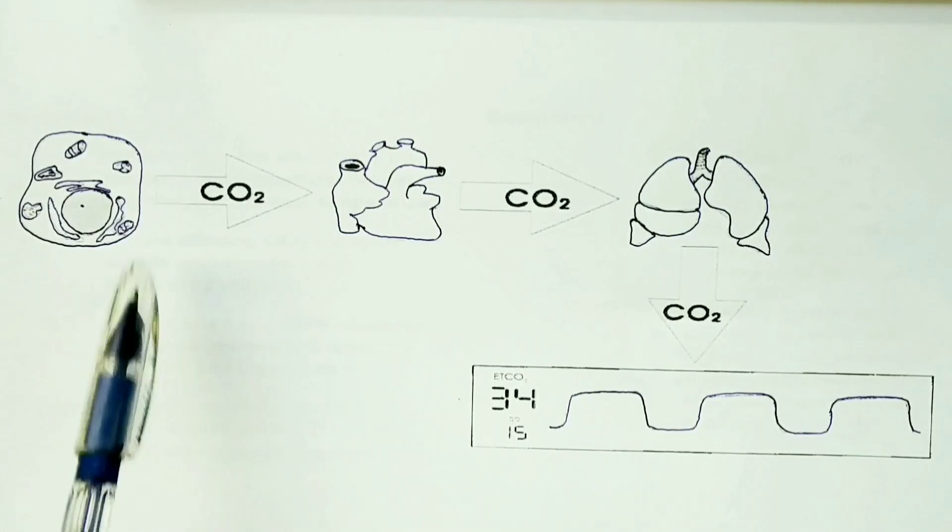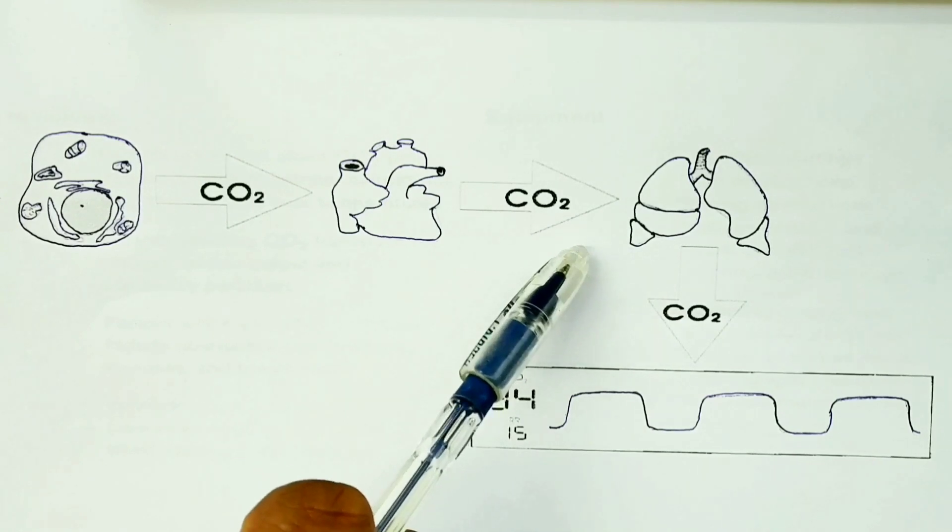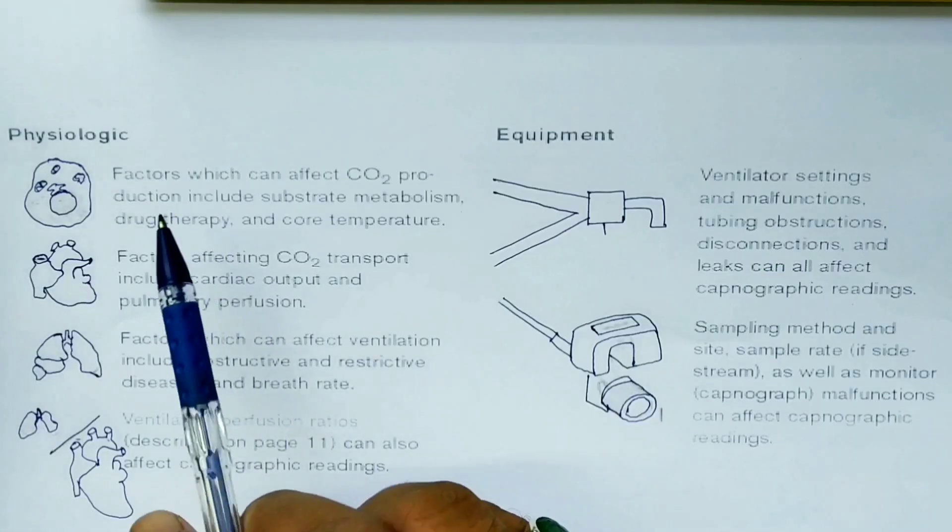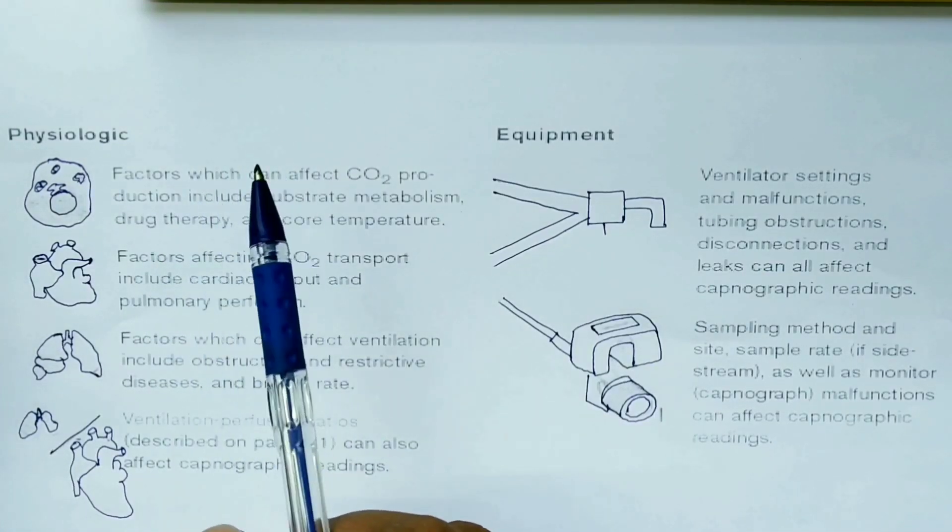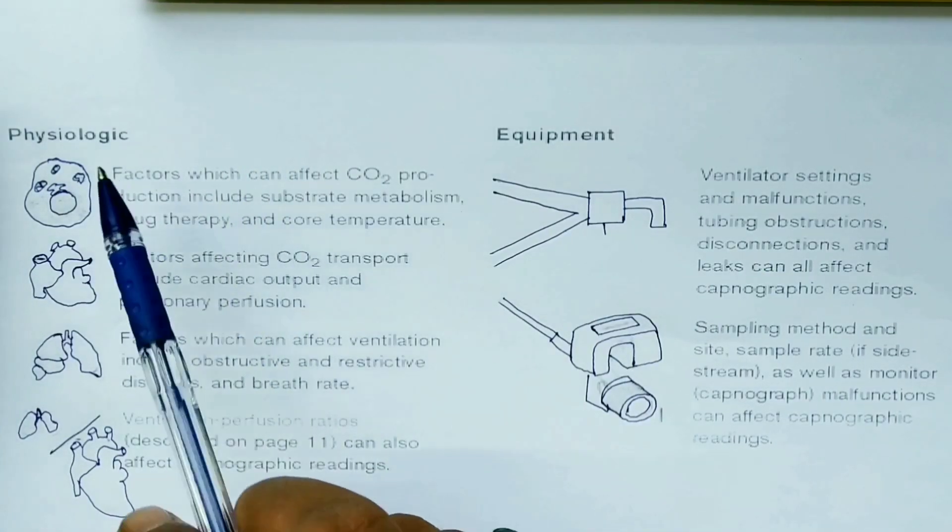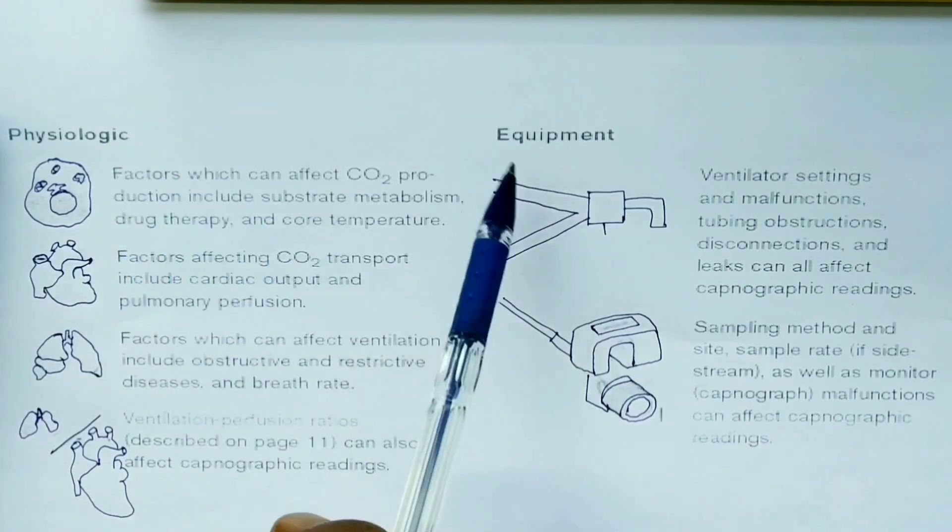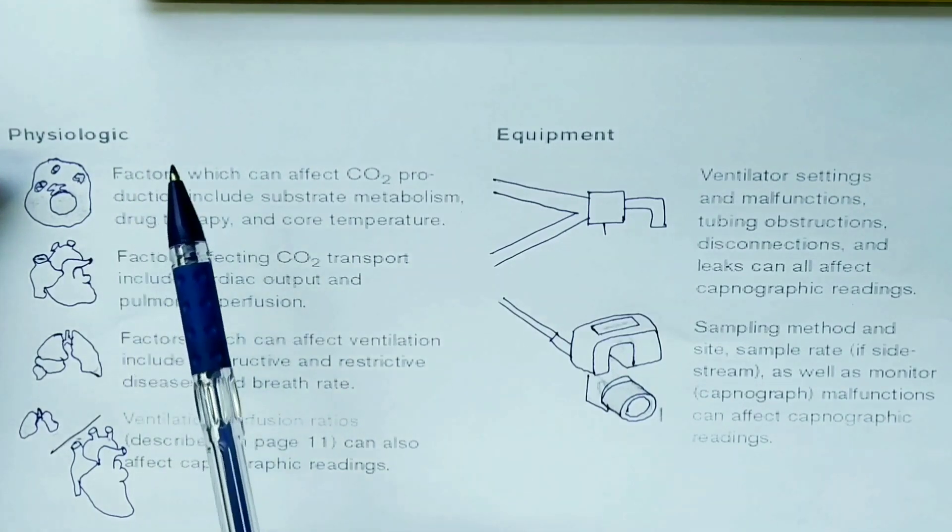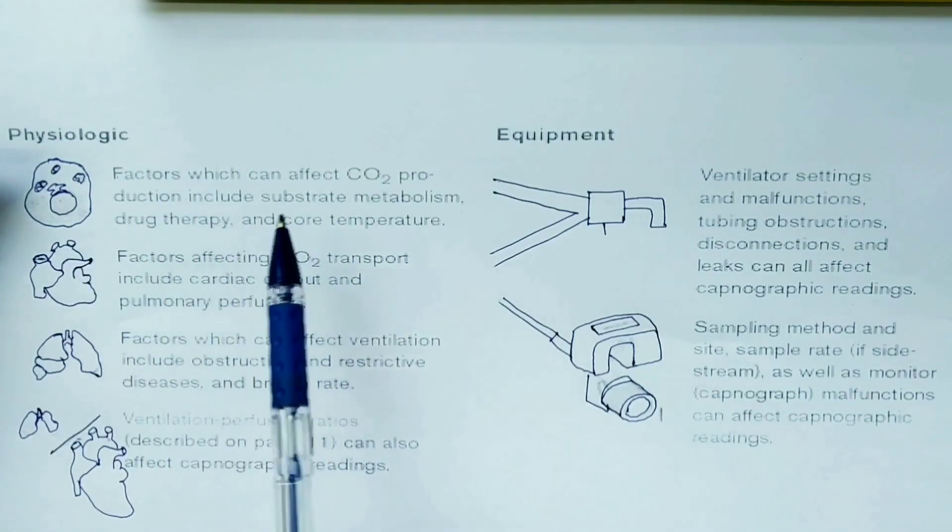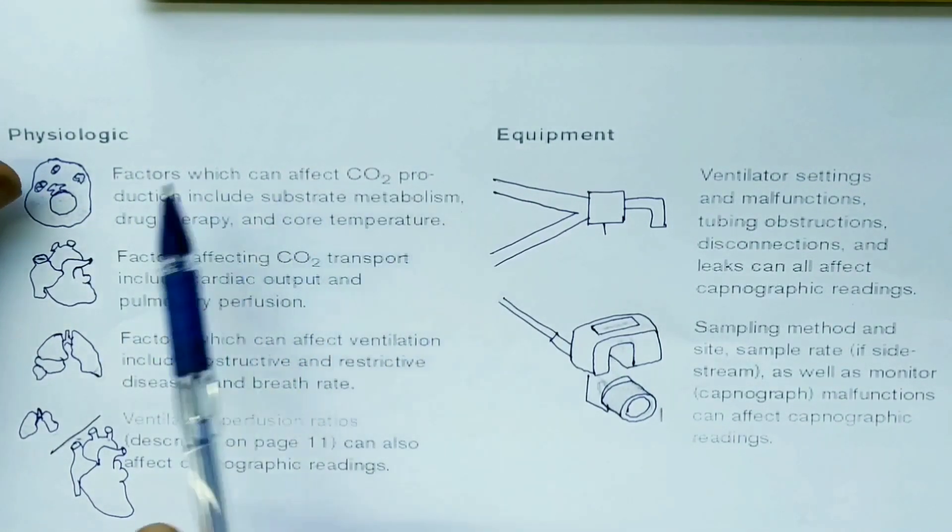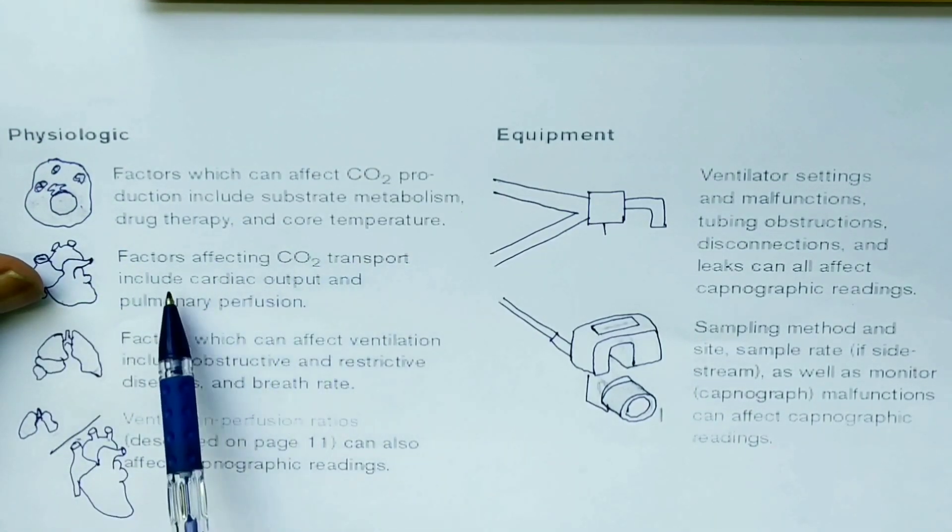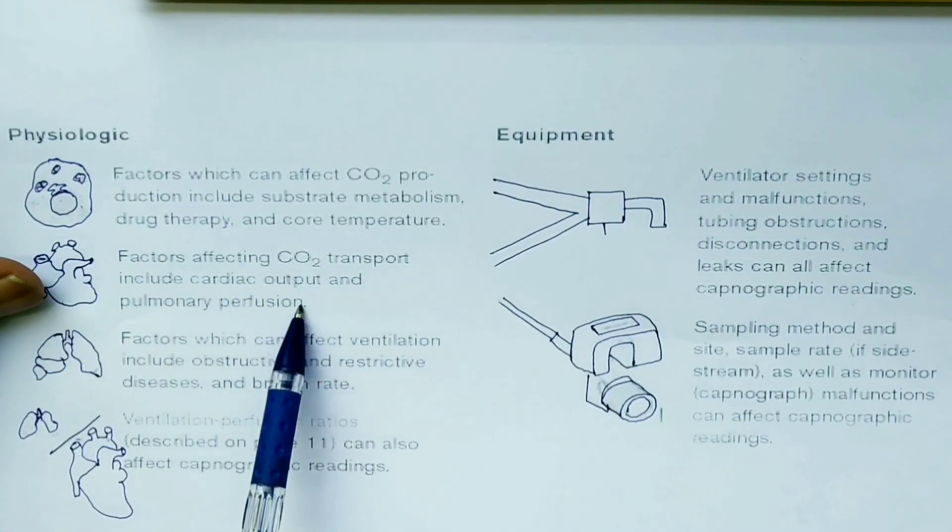The sum of cellular metabolism, transport, and ventilation is shown by the ET CO2 graph on the patient monitor system. There are two things we need to consider in the ET CO2: one is the physiological factor, the other is the equipment. In physiological, the factors which can affect CO2 production include substrate metabolism, drug therapy, and core temperature. Then the factors affecting CO2 transport include cardiac output and pulmonary perfusion.